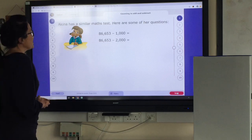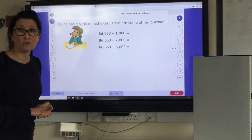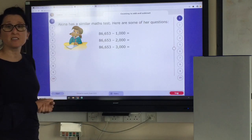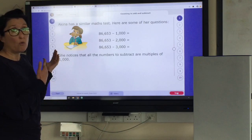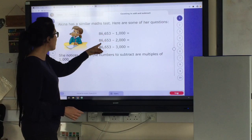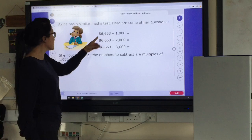Akina has a similar maths test and she's now working in chunks of thousands. So hopefully you're going to know what I'm going to say next. What am I going to say next? You're going to go to your thousands column, aren't you? So you're going to look at what's in your thousands place value column and it's a 6.